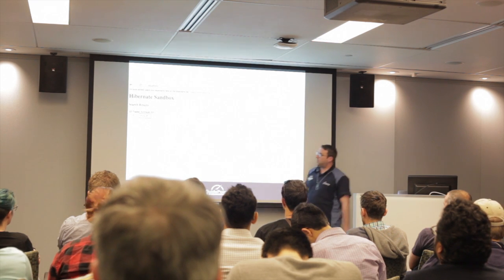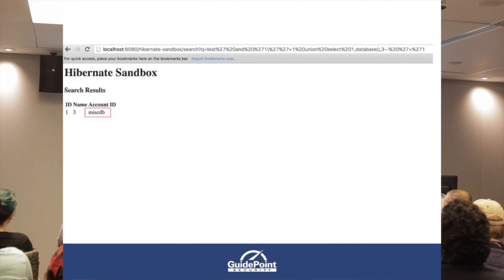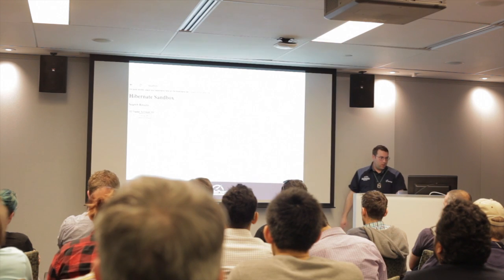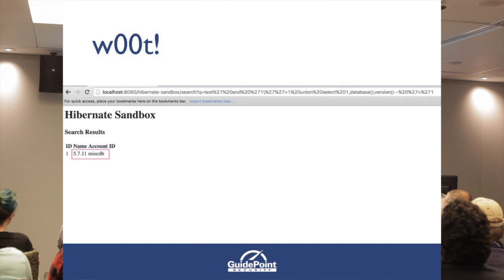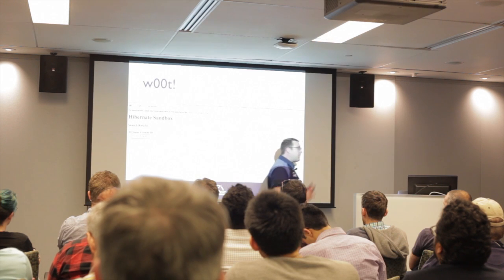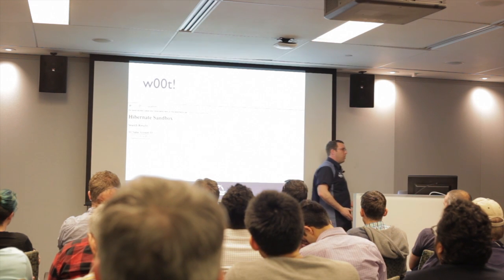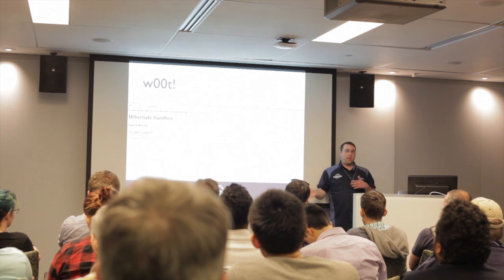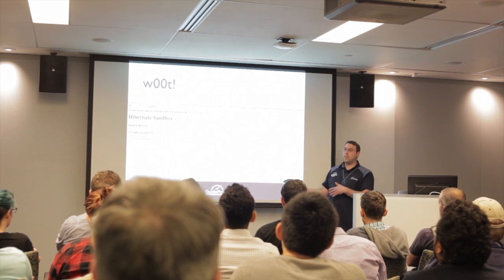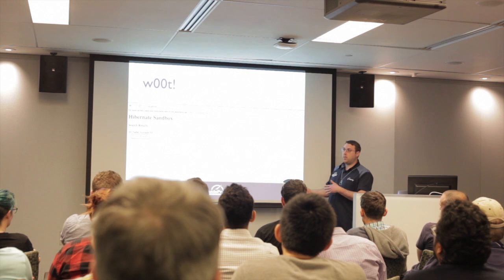We can see the database name returned from the database. We can also retrieve the version — just adding the version function in the same position, and there's the database version dumped into the name field. At this point, nothing is related to Hibernate or HQL anymore — we're just doing pure SQL injection into that field.